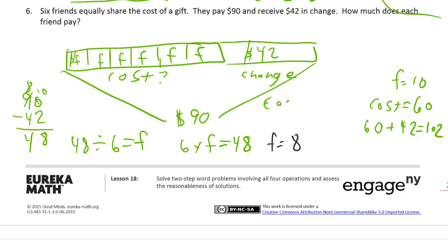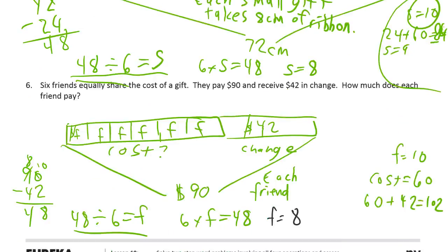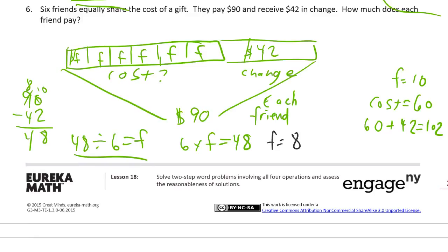Each friend, and this should be familiar too because we had to do 48 divided by 6 just in number 5 so we've already figured that one out. Each friend pays $8.